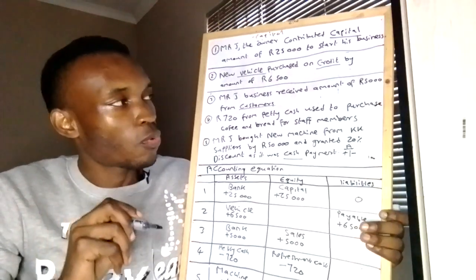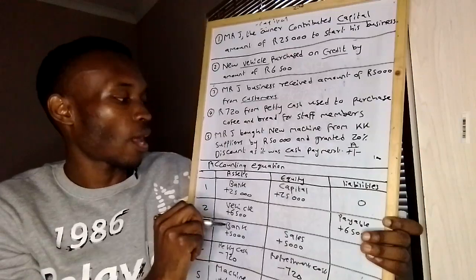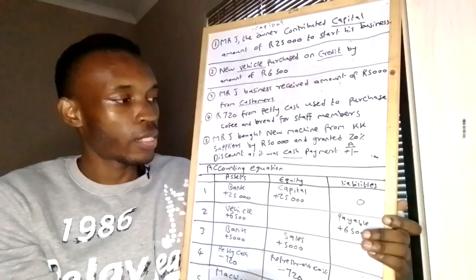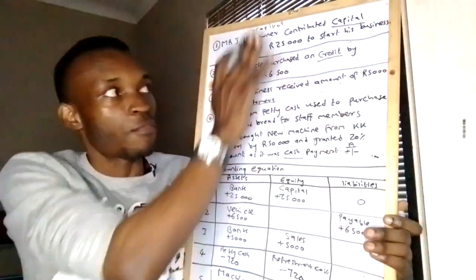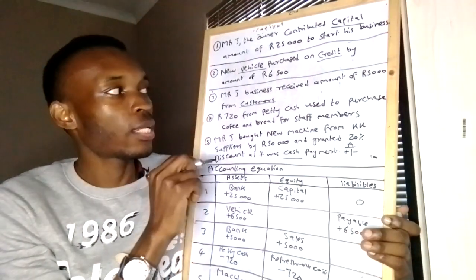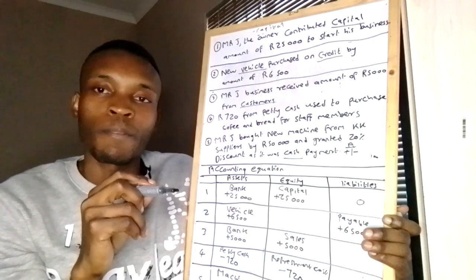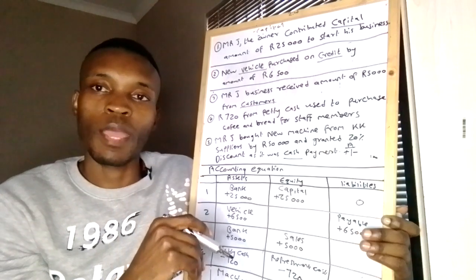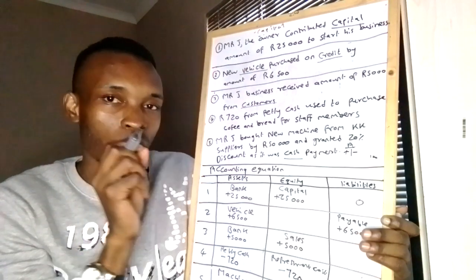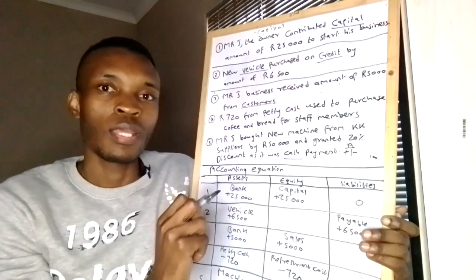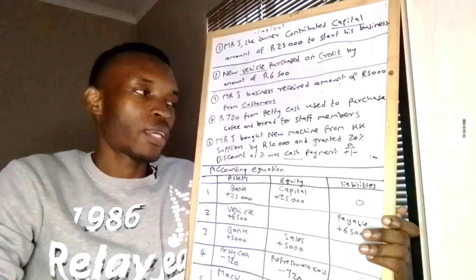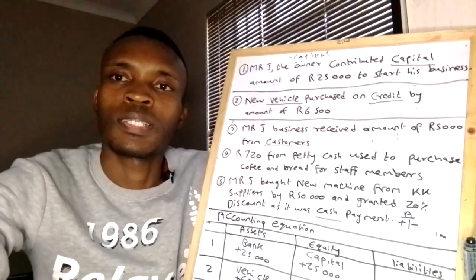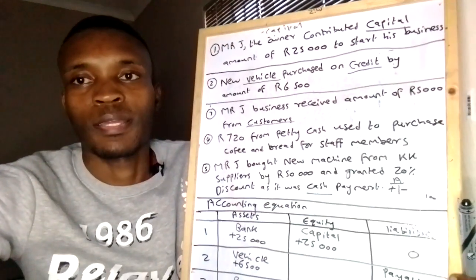That's it for this lesson. The most important things under the accounting equation: make sure you know what falls under asset, what falls under equity, and what falls under liability. Once you hear 'business received,' 'cash,' or 'paid' — know that bank is affected. Identify the bank first, then identify the other account from the transaction. The accounting equation will then be straightforward. I hope you enjoyed and learned something.